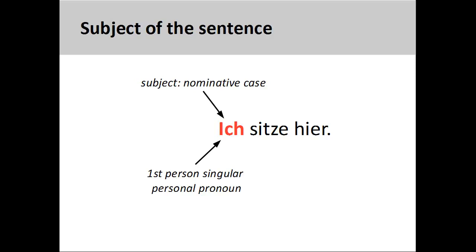In the sentence you see on the screen, ich sitze hier, I am sitting here, the first-person singular personal pronoun ich performs the action of sitting, therefore it is in the nominative case and the subject of the sentence. The adverb hier simply describes the place where the action is being performed.